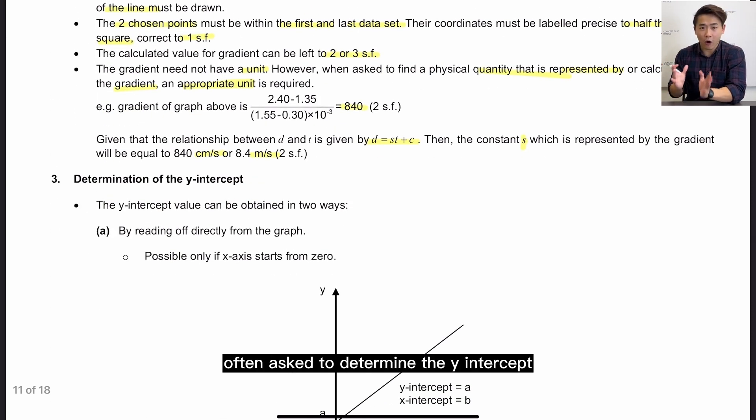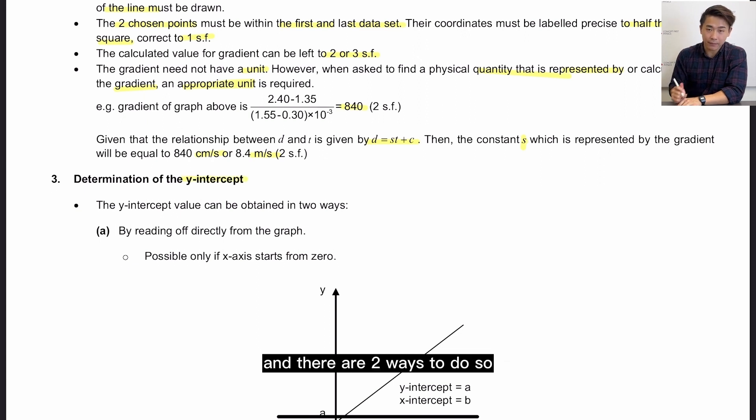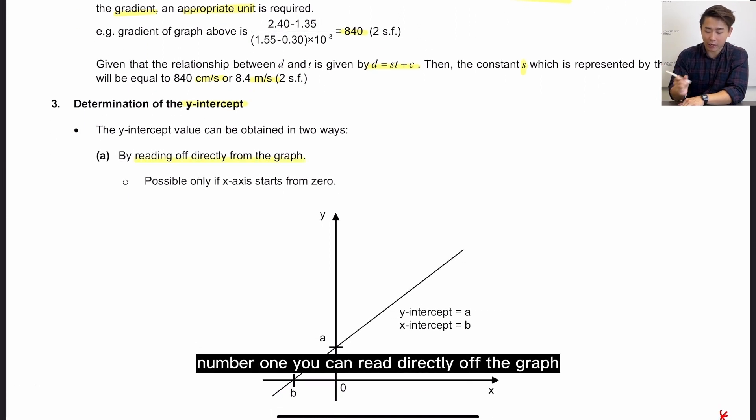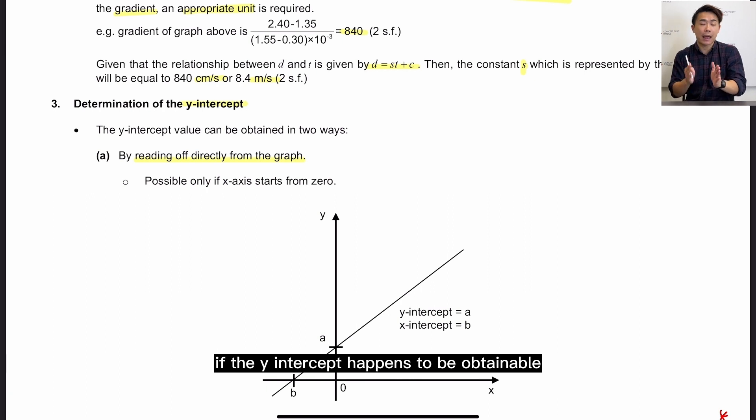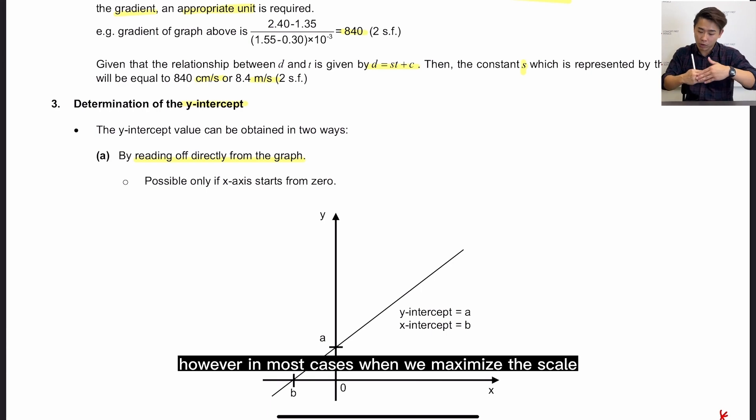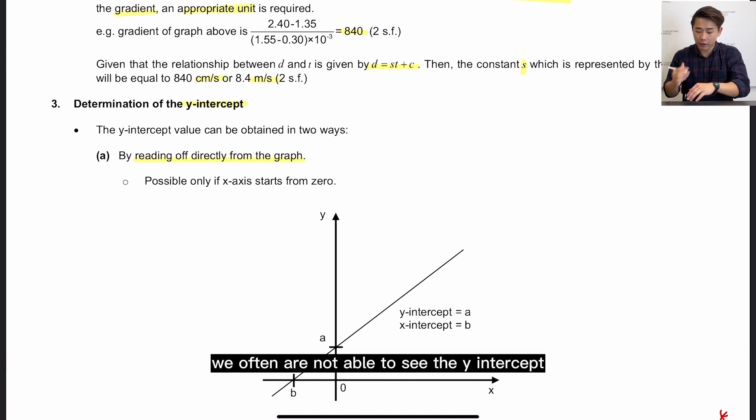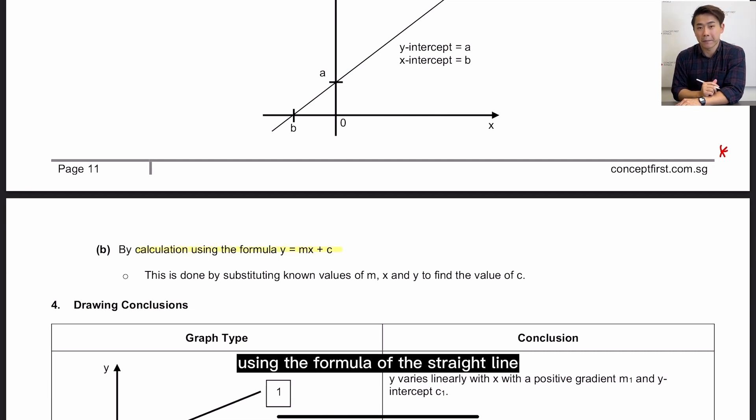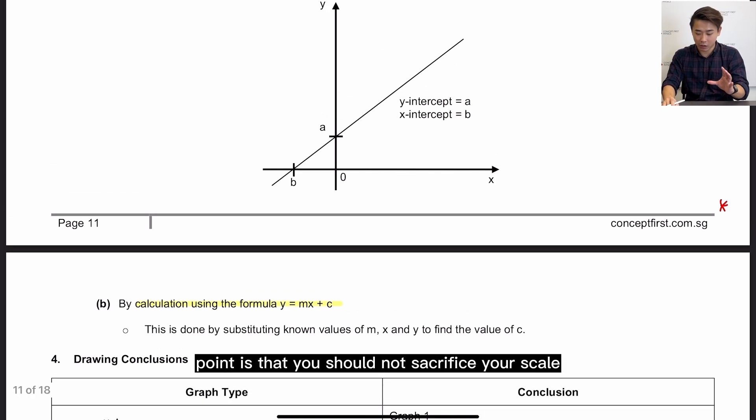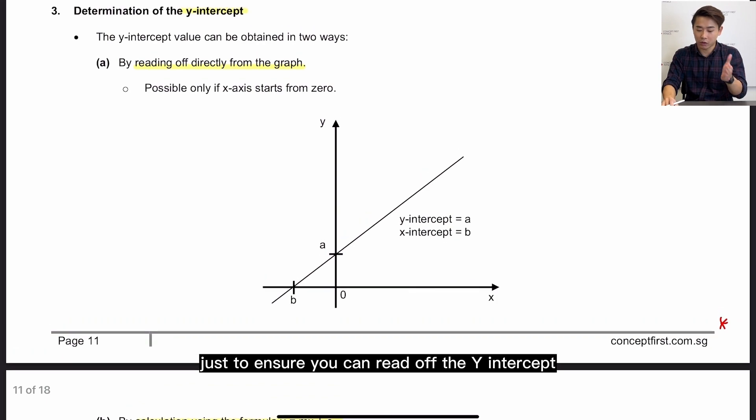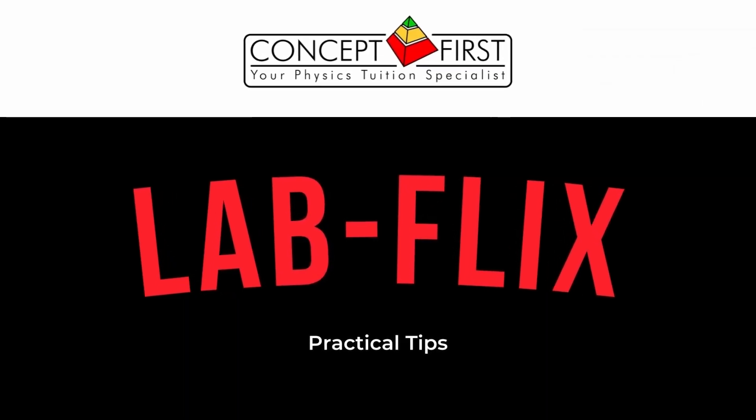Next, you are also often asked to determine the y-intercept, and there are two ways to do so. Number one, you can read directly off the graph if the y-intercept happens to be obtainable from the graph. However, in most cases, when we maximize the scale, we often are not able to see the y-intercept. In that case, you can calculate using the formula of the straight line. So both methods work, and a key underlying point is that you should not sacrifice your scale just to ensure you can read off the y-intercept.